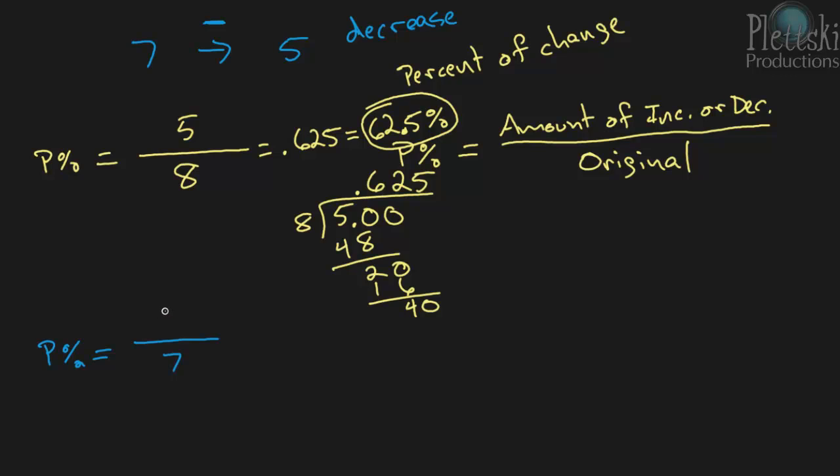And then the percent of decrease, or the amount of decrease, well, we had to take away 2. We had to subtract 2 to get from 7 to 5. So it's going to be 2 on the top in the numerator.